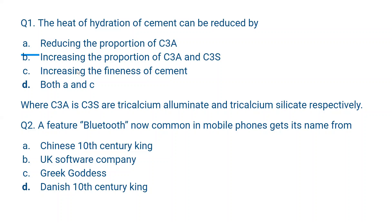So what is the heat of hydration of cement? When we mix cement with water, it's an exothermic process — it gives heat. When the cement sets, the heat comes out, causing thermal expansion and surface cracking, which we don't want. Reducing the proportion of tricalcium aluminate (C3A) reduces the heat of hydration, allowing the cement to set more easily without cracking. So D — both A and C — is the answer.